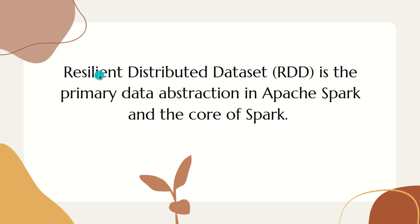Resilient means fault tolerant. Distributed means the data will be stored on multiple nodes in a cluster. So it's a primary data abstraction in Apache Spark and considered the core of Spark, because everything we see today in Spark — whether it's DataFrame, Dataset, or other structures — all got derived from RDD.